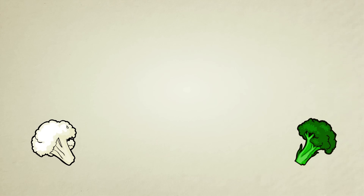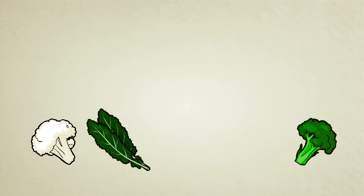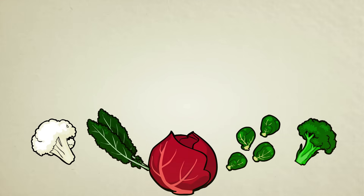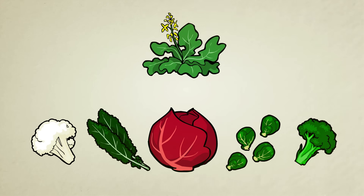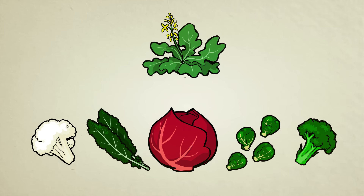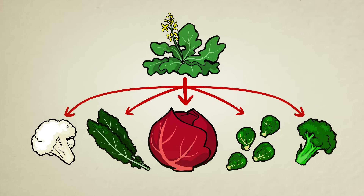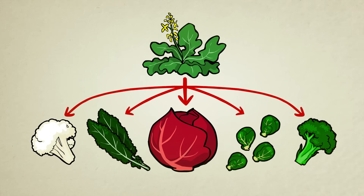You might be surprised to hear that broccoli, cauliflower, kale, brussel sprouts, and cabbage are all just different breeds of a single type of weed commonly found along the shores of the English Channel. The evolution of this original plant into all the varieties we see today was carefully guided by different farmers around the world who simply selected for different traits.